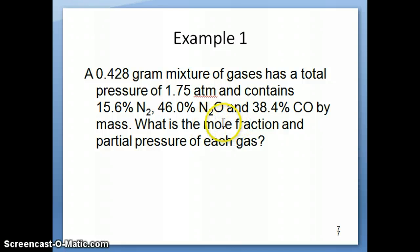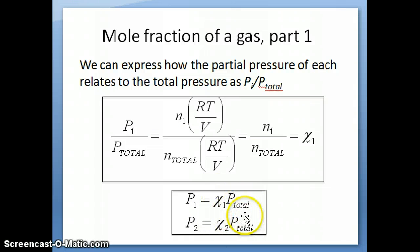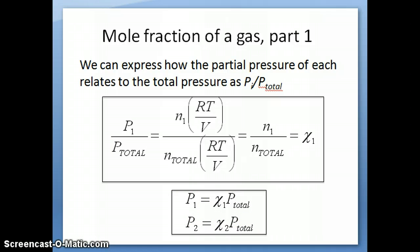Once we have our mole fraction, it shouldn't be too difficult to calculate the partial pressure, because we can use the equation where mole fraction times total pressure gives partial pressure. The total pressure is also given in the question, so the mole fraction of each gas times the total pressure gives us the partial pressure of that gas.